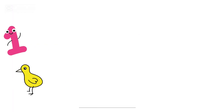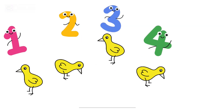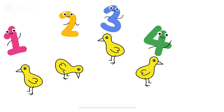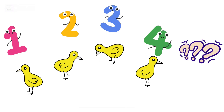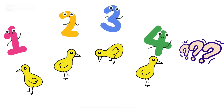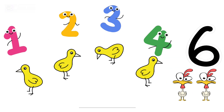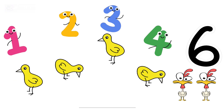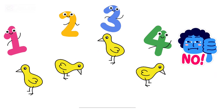Let's count the chicks that we see. 1, 2, 3, 4. Oh! Do you know the number that comes after 4? Is it the number 6? 1, 2, 3, 4, 6? No, that's not right.